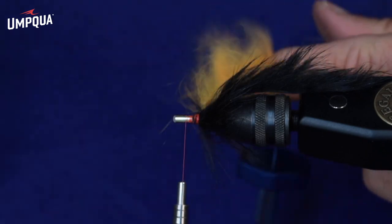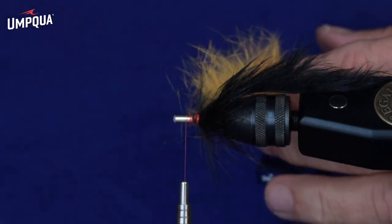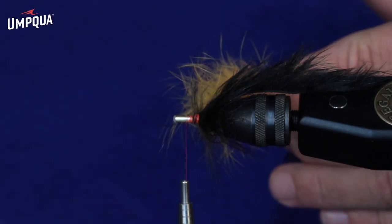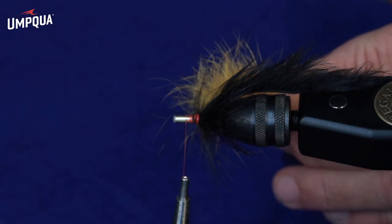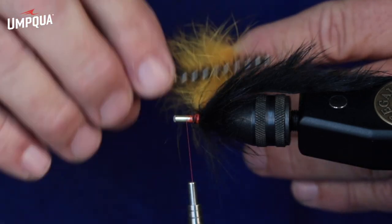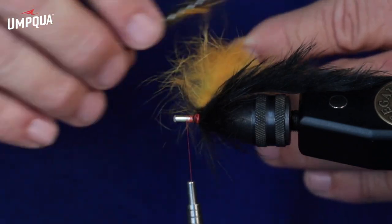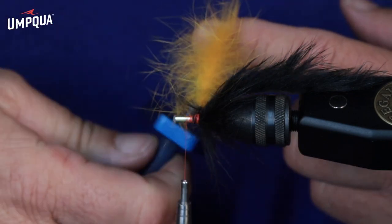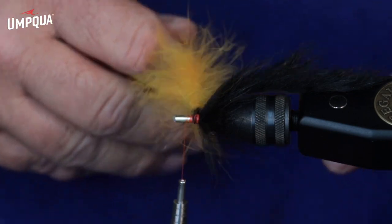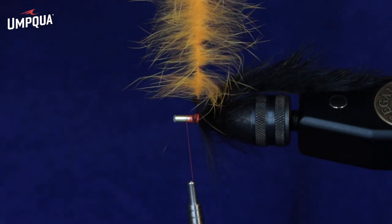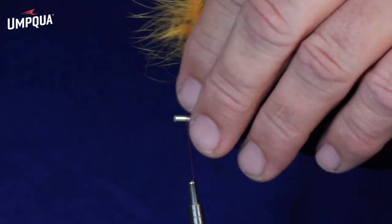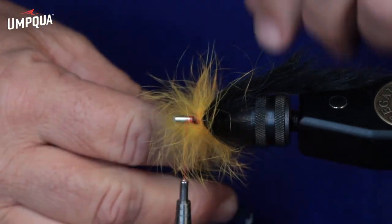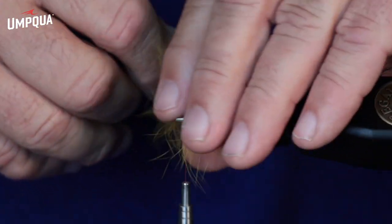What this does is, you could just wrap it with it on the hide, but we want to create less bulk when we're tying this fly, and so by eliminating the hide, we eliminate some weight. Rabbit is not light. It's not a light material, so you don't want to overload your fly. So, once you've got your dubbing loop filled with the rabbit, we're just going to wrap forward.